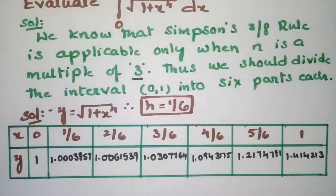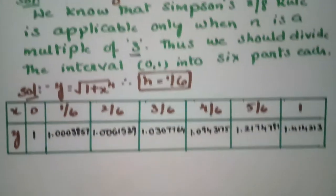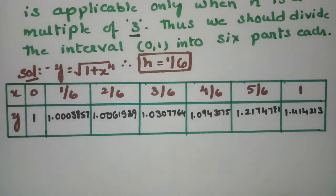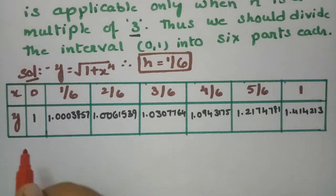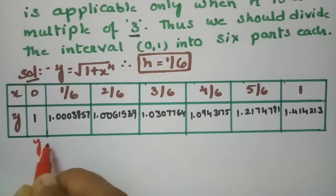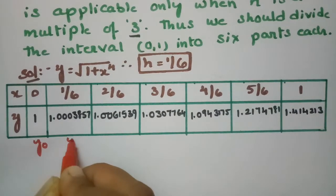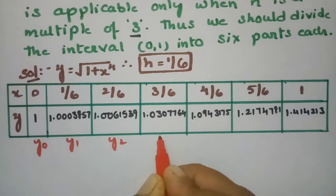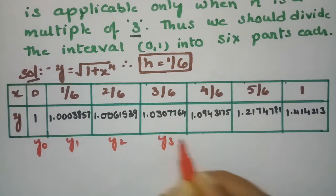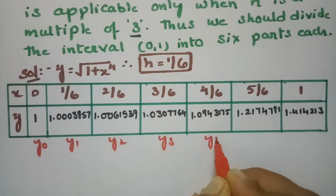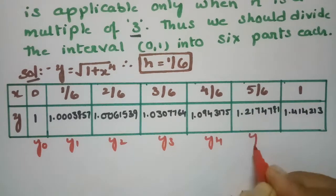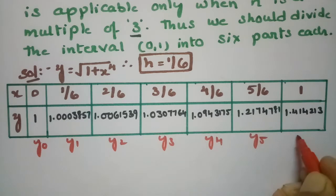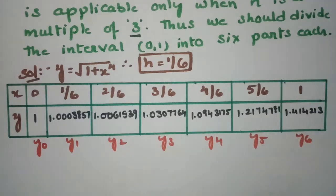After getting all these values, we name them: y₀ = 1, y₁ = 1.0003857, y₂ = 1.0061539, y₃ = 1.0307764, y₄ = 1.0943175, y₅ = 1.2174781, and y₆ = 1.414213.